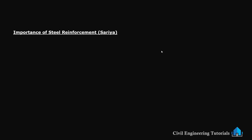Now that we have covered column size, let's move on to the most important part of any concrete structure: steel reinforcement, also known as sariya. Steel bars are used inside the concrete columns to resist tension and prevent cracks under heavy loads. Without the proper amount of steel, columns may fail under pressure.